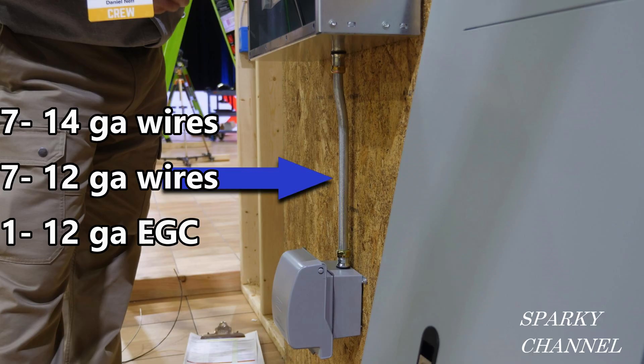So let's say you were being tested on this and there were seven 14-gauge wires, seven 12-gauge wires, and one 12-gauge EGC in the form of a green ground wire, all in this one conduit. Do you think that would be a code violation? Well, let's check it out.